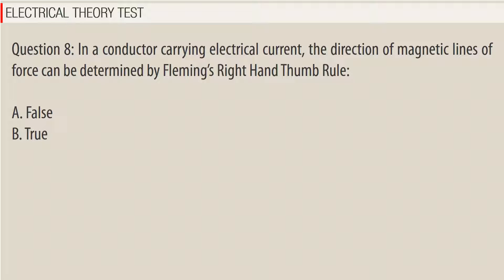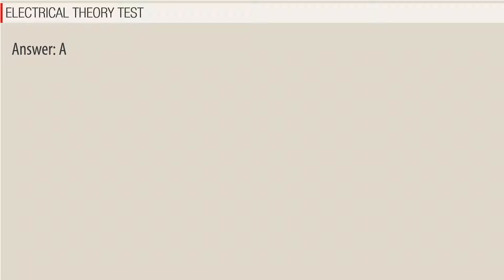Question 8. In a conductor carrying electrical current, the direction of magnetic lines of force can be determined by Fleming's right-hand thumb rule. a. False. b. True. Answer: A.